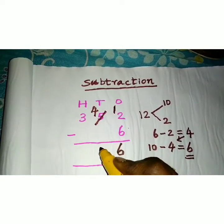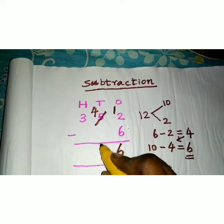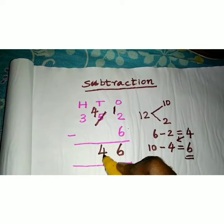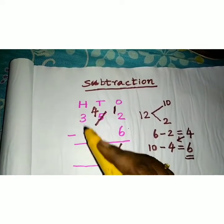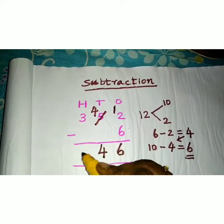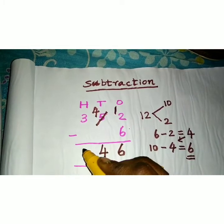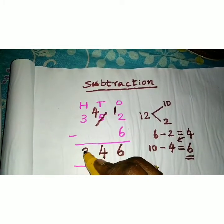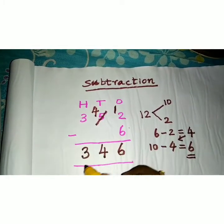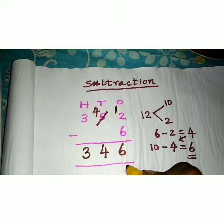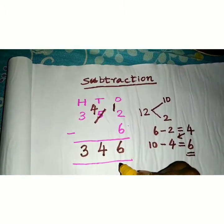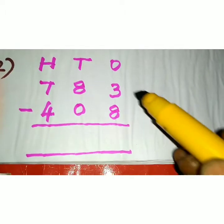You have to subtract 2 times while doing the number bond method. In the tens place, 4 is there — 4 minus nothing is 4. In the hundreds place, 3 is there — 3 minus nothing is 3. So your answer is 346.